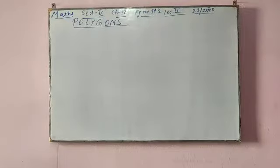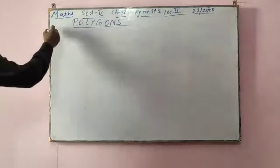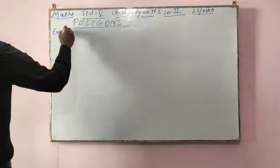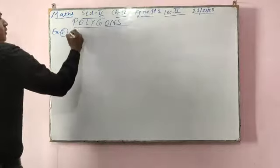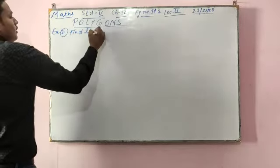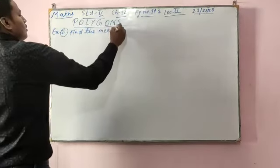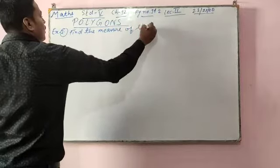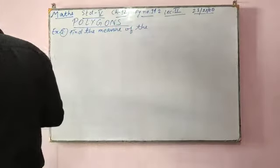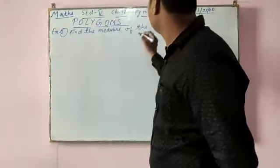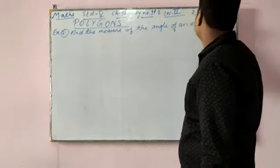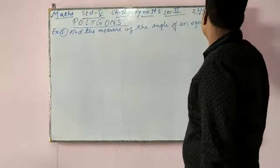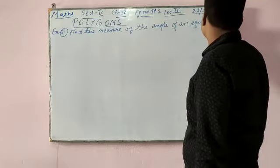Now come to lecture number 2, example number 2. The question is: find the measure of the angle of an equilateral triangle.